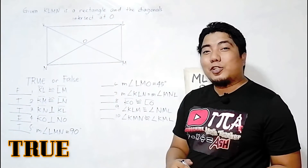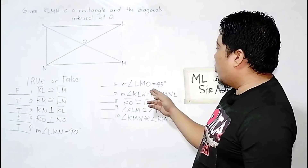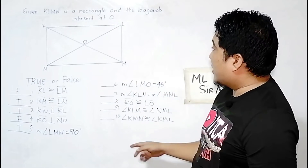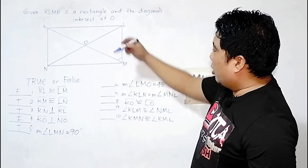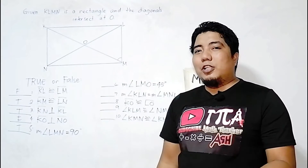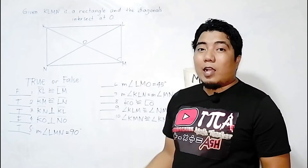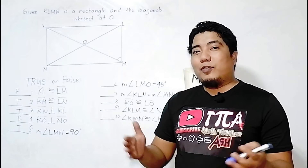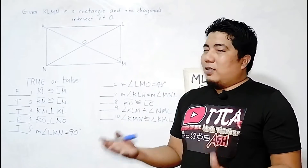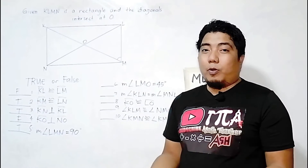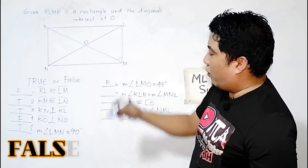Statement 6: The measurement of angle LMO is equal to 45 degrees. There is no property that states the diagonal bisects the angles of a rectangle, and even among the parallelogram properties, nothing supports that statement. Therefore, this statement is false.